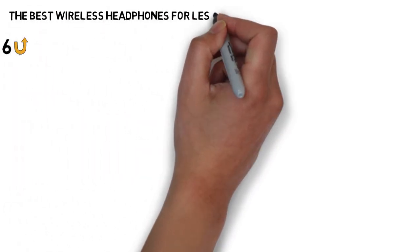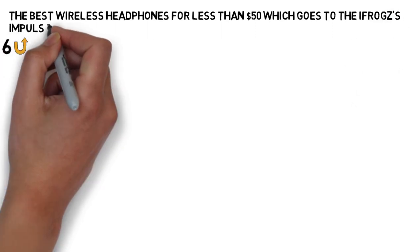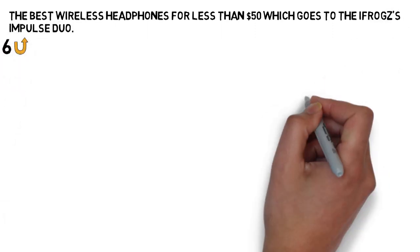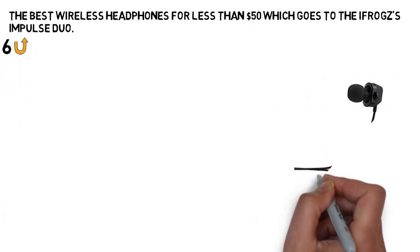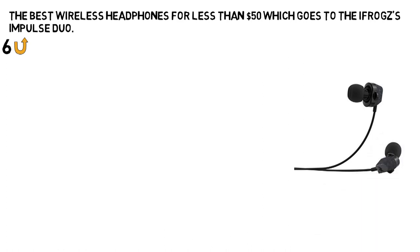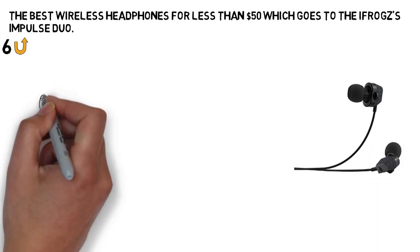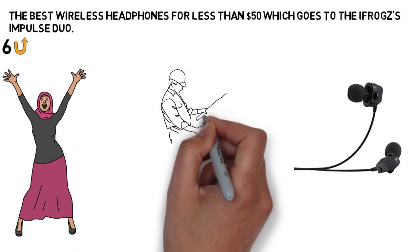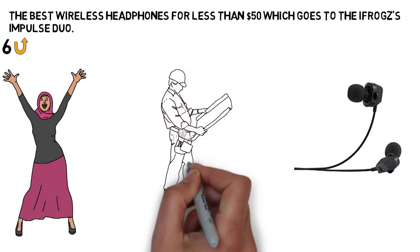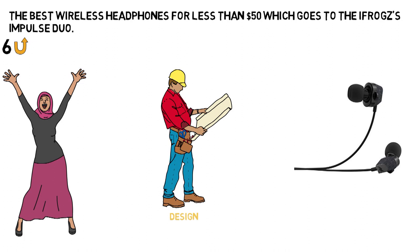Second from last we have the best wireless headphones for less than $50 which goes to the iFrogs Impulse Duo. These iFrogs headphones made the best earbuds guide, so I'm just going to echo what I said there below. Besides sounding pretty good for the price, the reason the iFrogs Impulse Duo earbuds made the cut over all the other budget models I've tried is their design.